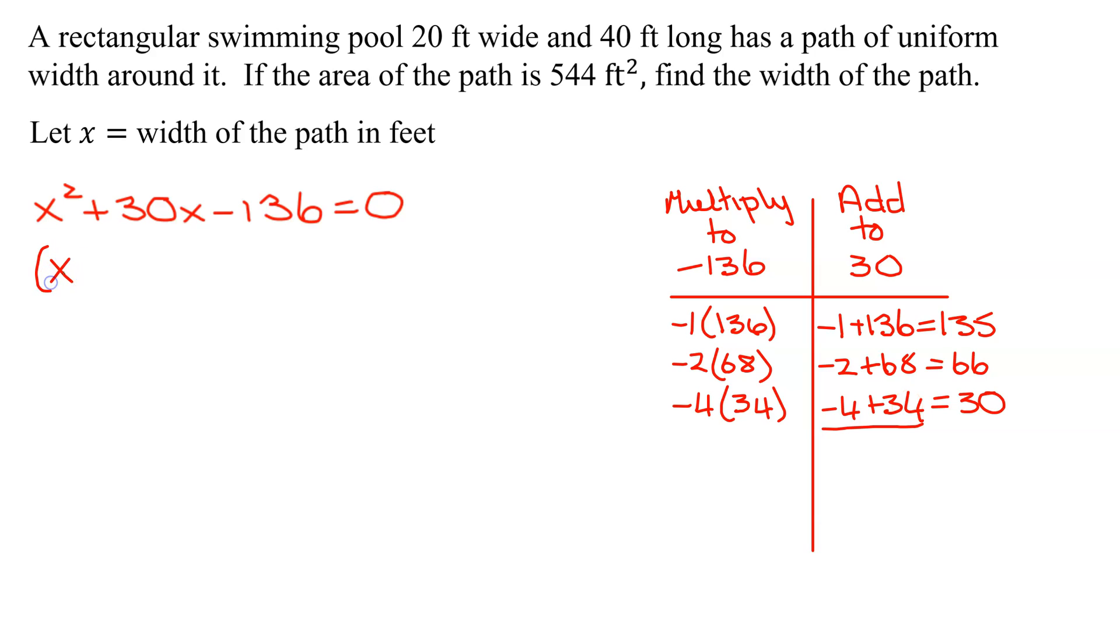So I'm going to get x minus 4 times x plus 34 equals 0. Now two factors multiply together equals 0, you set each of them equal to 0. x minus 4 equals 0. Add 4 to both sides. That gives you x equals 4.